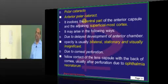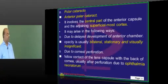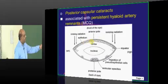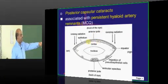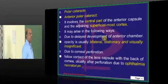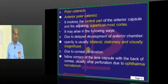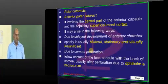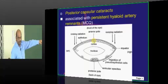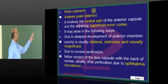The second type of congenital cataract after capsular is polar cataracts. Anterior polar cataract involves the central part of the anterior capsule and the adjoining cortex. The underlying cause is a delay in the development of the anterior chamber at the time of eye development, which is responsible for the opacity in the anterior pole. Delayed anterior chamber development is the underlying cause in a good number of anterior polar cataract cases.